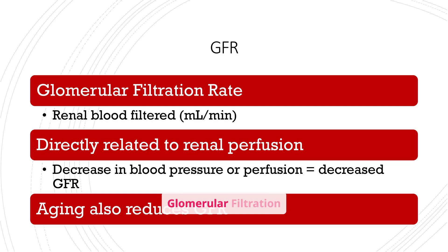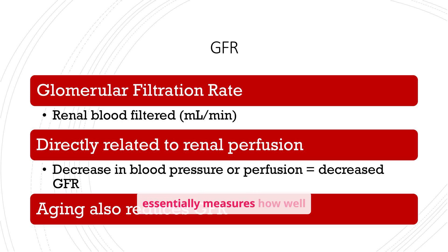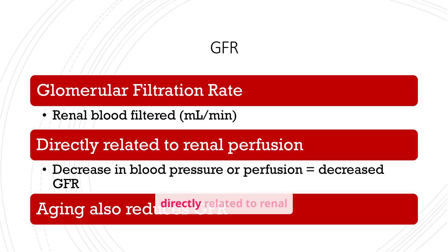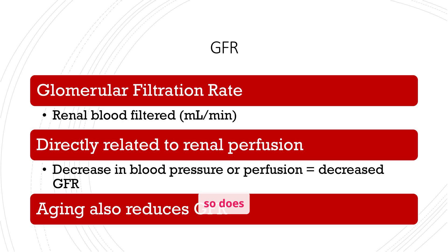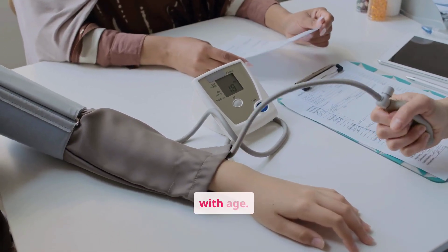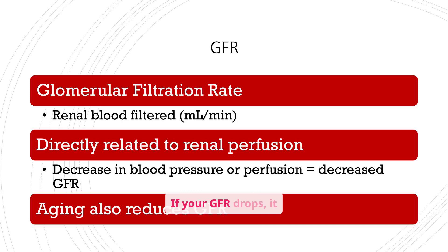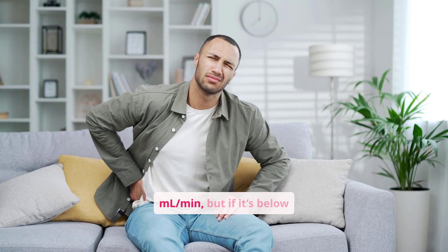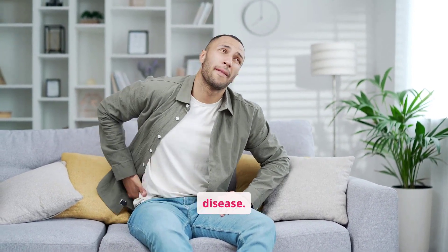Let's start with glomerular filtration rate, or GFR. GFR essentially measures how well your kidneys are filtering your blood. It's directly related to renal perfusion, meaning that if blood pressure or perfusion decreases, so does GFR. Also keep in mind that GFR naturally declines with age. If your GFR drops, it means your kidneys are struggling. A normal GFR is typically over 90 mL/min, but if it's below that, you're at risk for kidney disease.